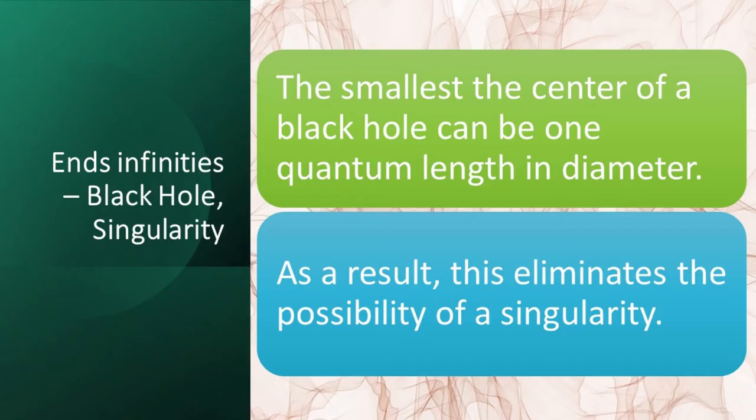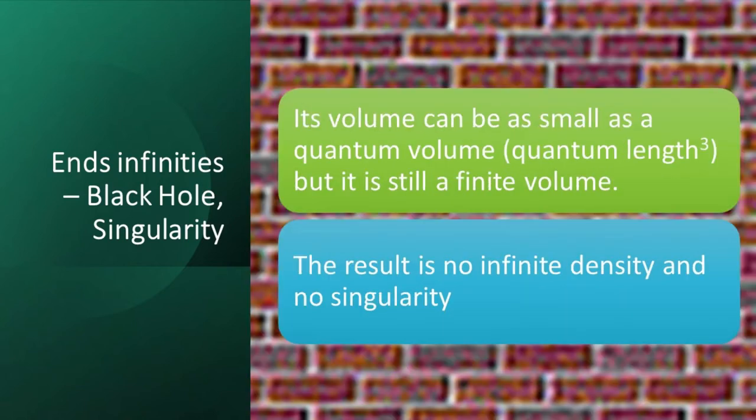As a result, the smallest the center of a black hole can be is one quantum length in diameter. As a result, this eliminates the possibility of a singularity. This means that its volume can be as small as a quantum volume—that's quantum lengths cubed—but it is still a finite volume.